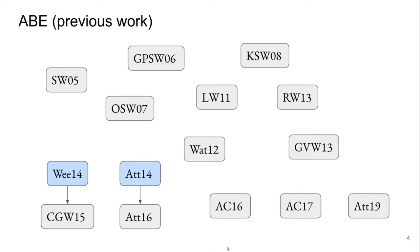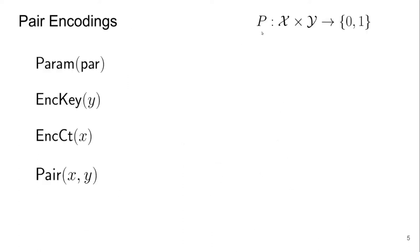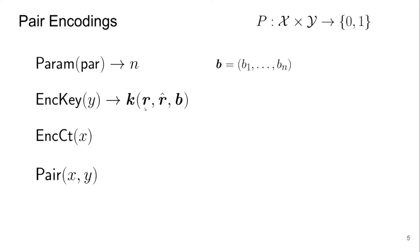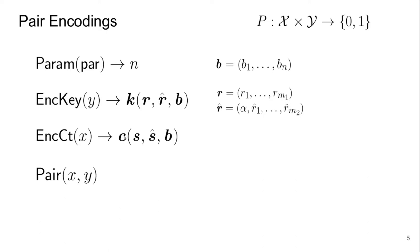Now let me define what a pair encoding actually is. A pair encoding, with respect to a certain predicate, consists of four algorithms. The first algorithm takes certain parameters defined by the predicate and produces an integer — the number of common variables. The key encoding and ciphertext encoding produce polynomials: k represents a vector of polynomials on several variables, with a distinguished variable called alpha. The ciphertext encoding also outputs a list of polynomials on different variables, and there are common variables b appearing in both, which is why they are called common variables. There is also a distinguished variable s0. Finally, a fourth algorithm outputs two matrices, and there are several conditions on the pair encoding scheme.